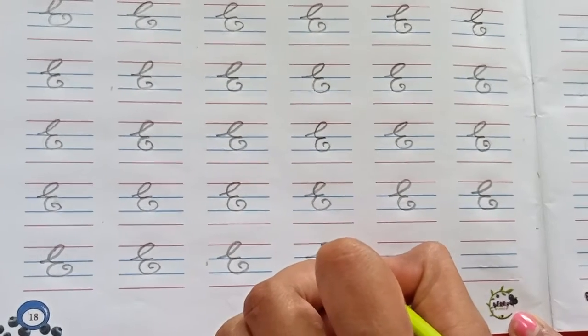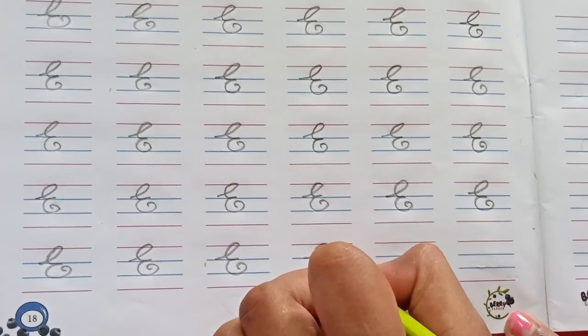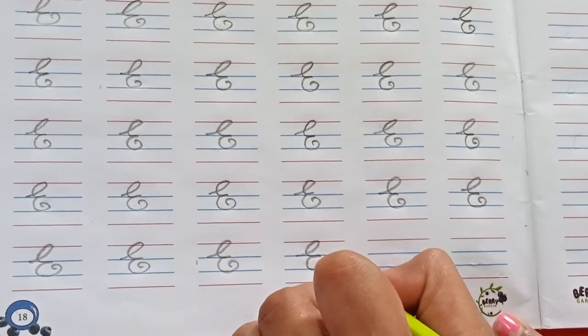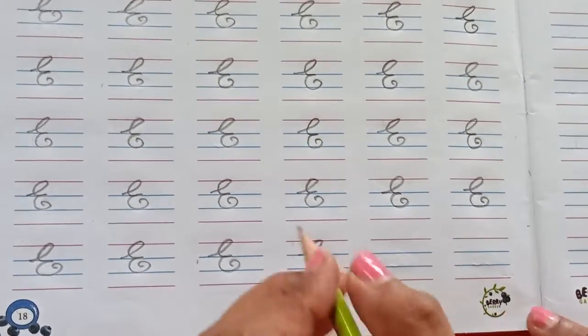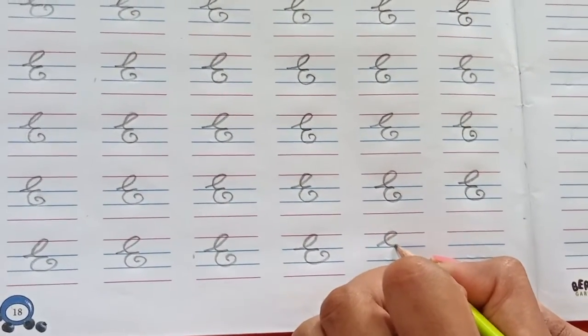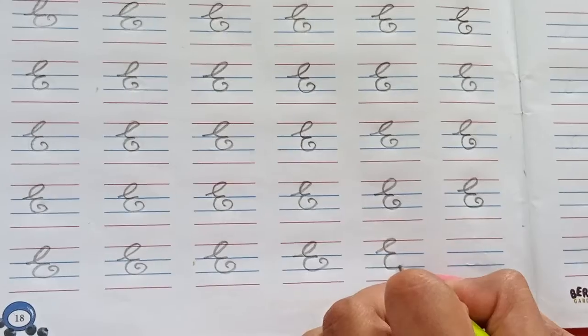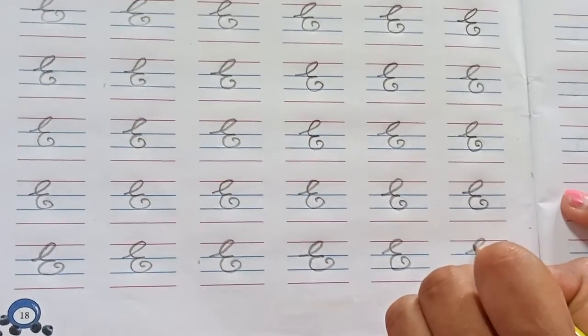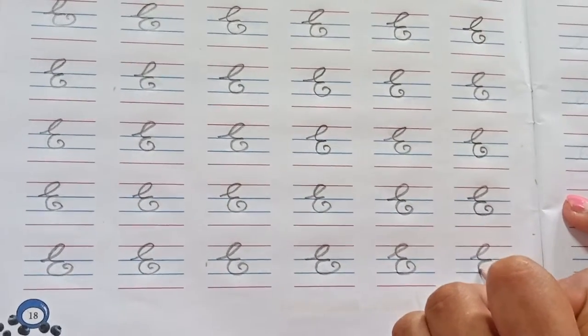Starting from the blue line. Touch the red line. Then come again. To second blue line and make a small curve. Like this. Write very neat and clean.